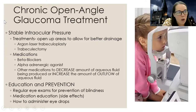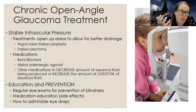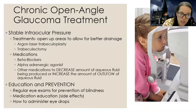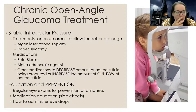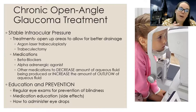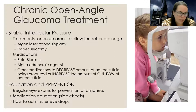For acute angle closure glaucoma treatment: this is an emergency. We need to reduce intraocular pressure fast or find a way to get drainage. Usually they need to create a new opening in the iris to allow drainage of the aqueous fluid. Medications are also given to decrease how much aqueous fluid you're making or to help it drain better. For chronic open angle glaucoma, the goal is stable intraocular pressure. Most patients are managed with eye drop medications — primarily alpha adrenergic agonists and beta blocker eye drops such as Timolol — to decrease aqueous fluid production or increase outflow.